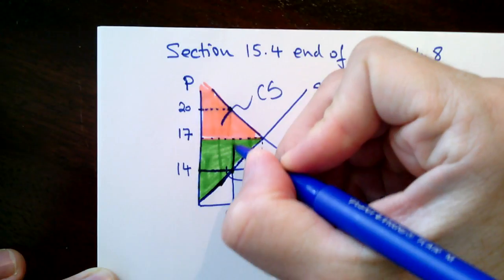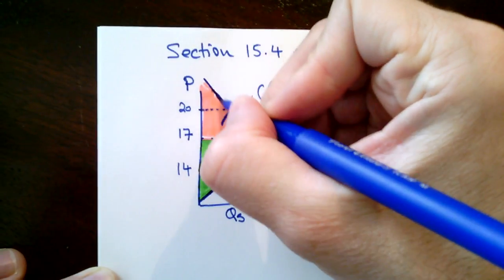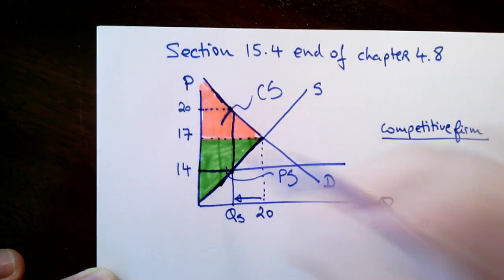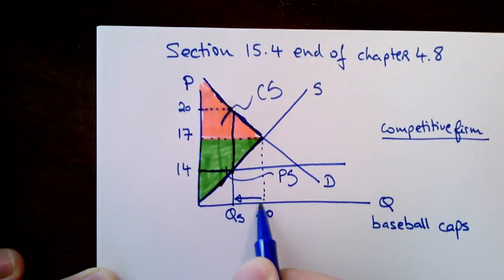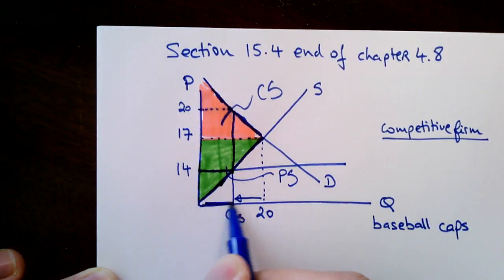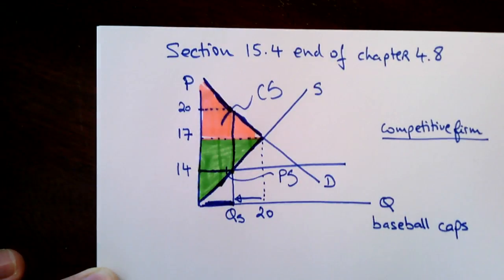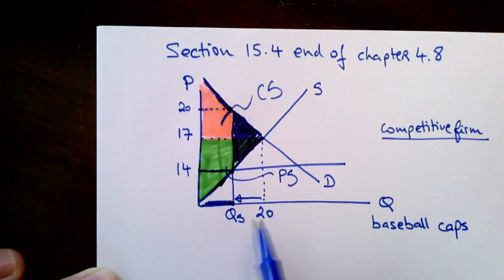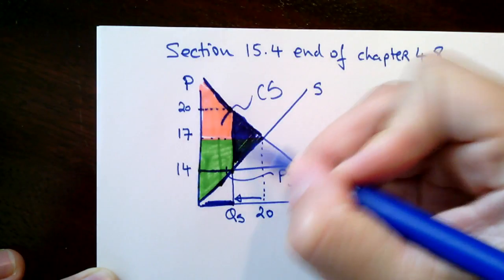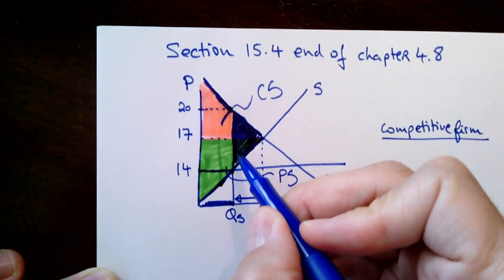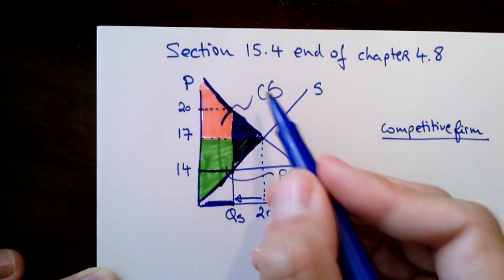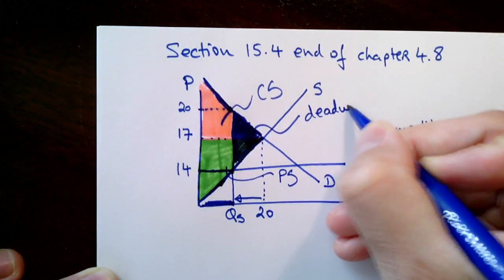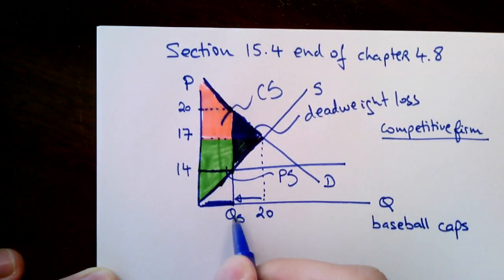If you look at who gets those baseball caps, only consumers that were willing to pay much higher than $14. Those other firms are not supplying those baseball hats, and all those other consumers cannot buy the extra hats. So only this much gets produced and bought. That area represents the loss associated with fewer baseball caps being sold. The dark pink triangle and the dark green triangle represent loss to consumers and loss to producers — together forming the dark blue triangle, which we call deadweight loss to society.